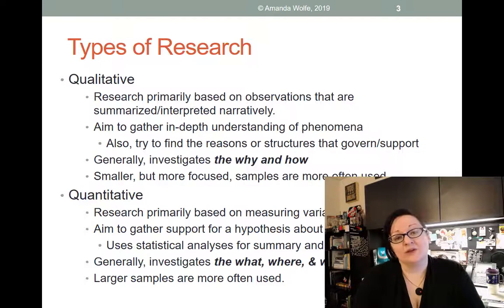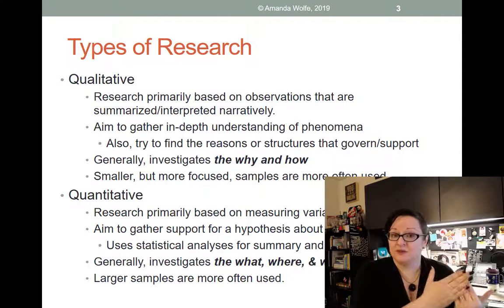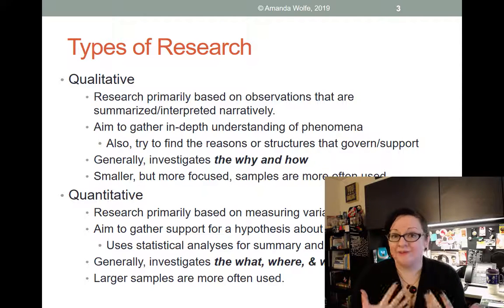This is important because as we go through the semester, I might ask you to critique research. And students often say things like, oh, well, there's only 20 people in the sample, so it must be a poor sample. Well, no, 20 people is actually a really large sample for qualitative. So just the number of people in a sample doesn't tell you whether or not it's a biased sample or a good sample. The type of research method will tell us better about how many people should be in a sample or not.